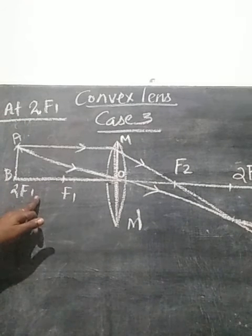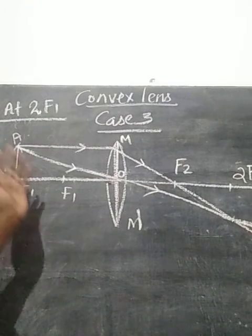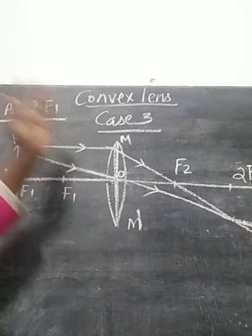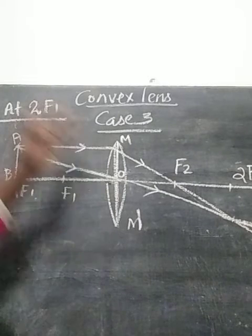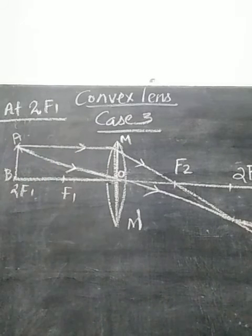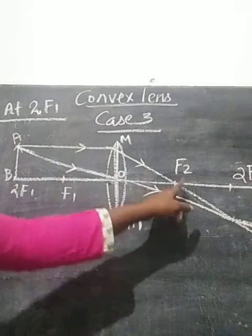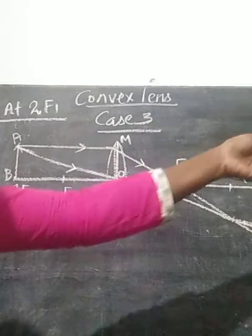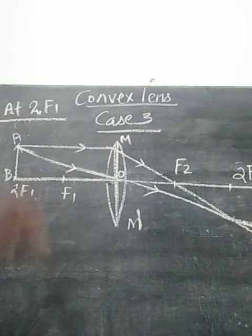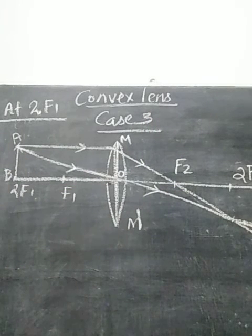The object is at 2F1 on the left side. F1 and 2F1 are the principal foci on the left side. Principal focus F2 and 2F2 are on the right side. This is the position of the object.